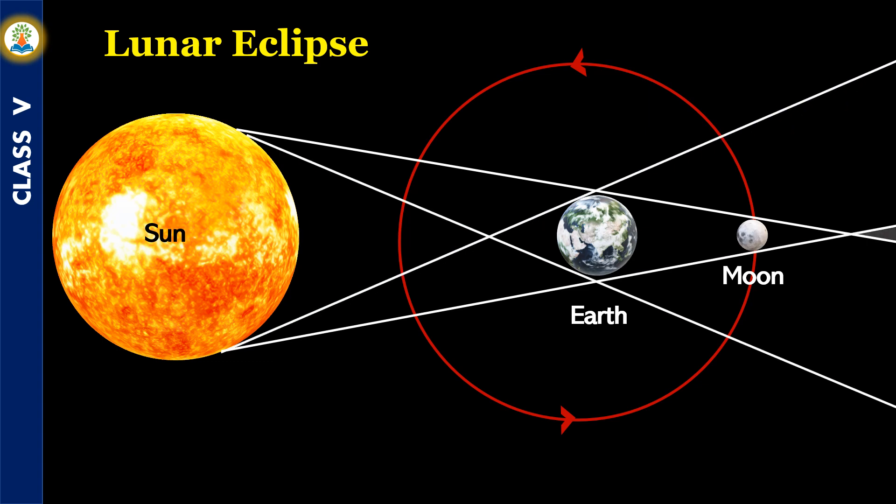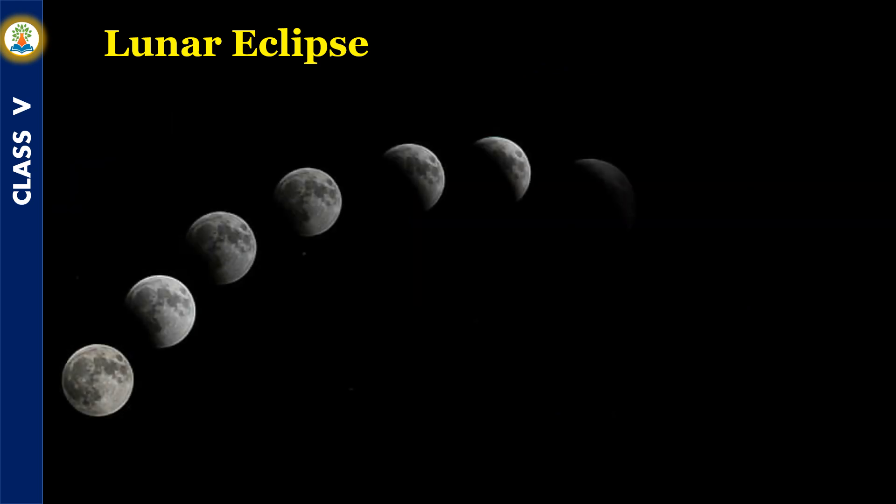In a partial lunar eclipse, only a part of the Moon is visible. Lunar eclipse occurs only on a full Moon day.